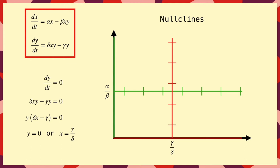And it's quite clear here that there are two fixed points, one at the origin, and a second one at gamma over delta, alpha over beta.